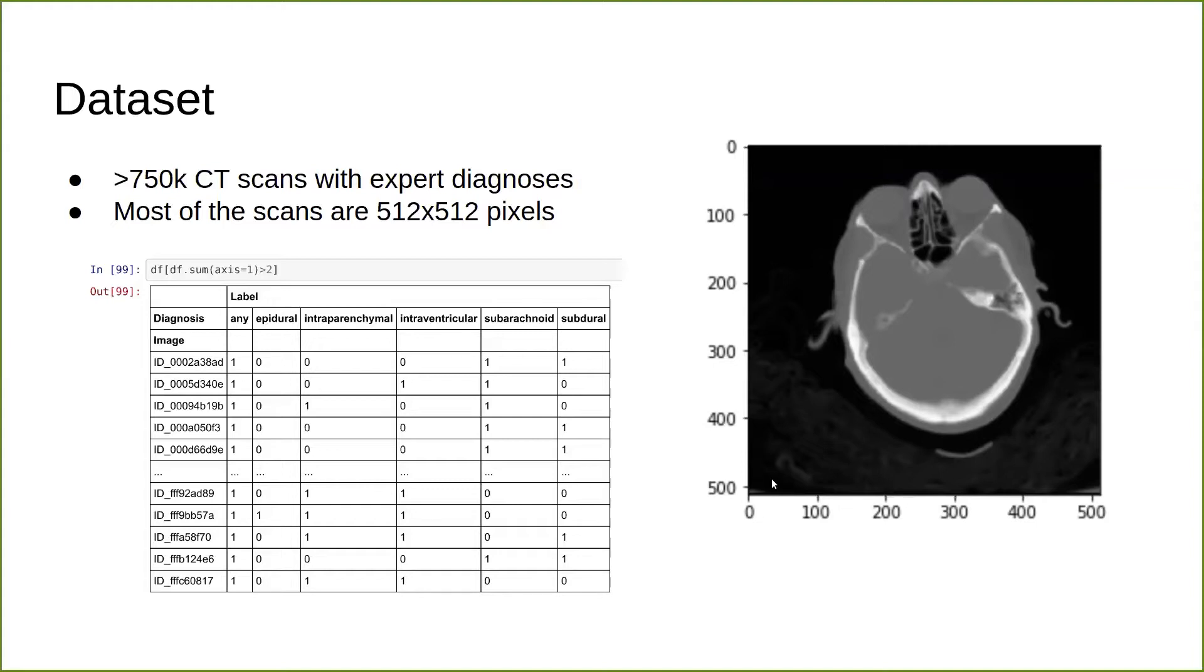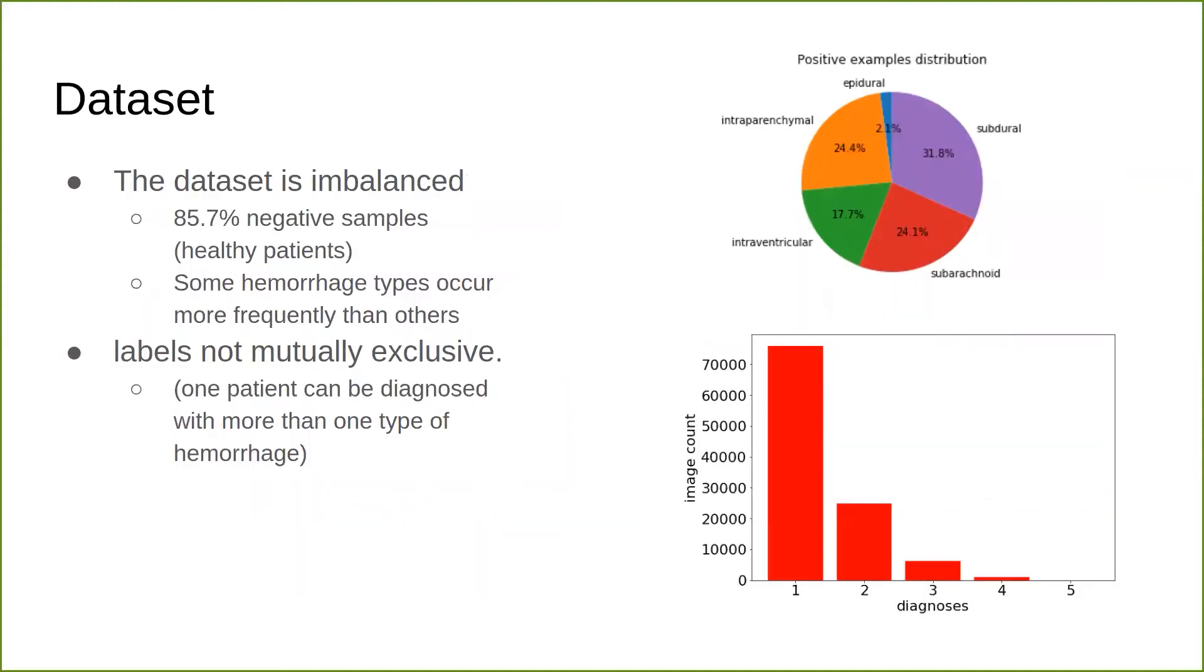Looking at this table, we can see that these classes are not mutually exclusive. You can have more than one type of hemorrhage in one scan, which led us to have some problems with data imbalance. We had to be mindful of it. 85.7% of the data was negative samples, so there were no hemorrhage in the scan, and 10% had one diagnosis, and the remainder had more than one diagnosis. Also, there are certain hemorrhages that are more common than others, as shown in this pie chart. Subdural was the most common type of ICH, and epidural, the least common.